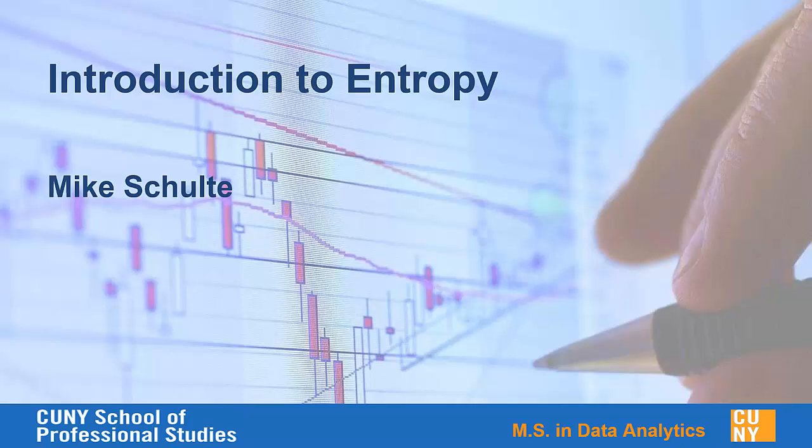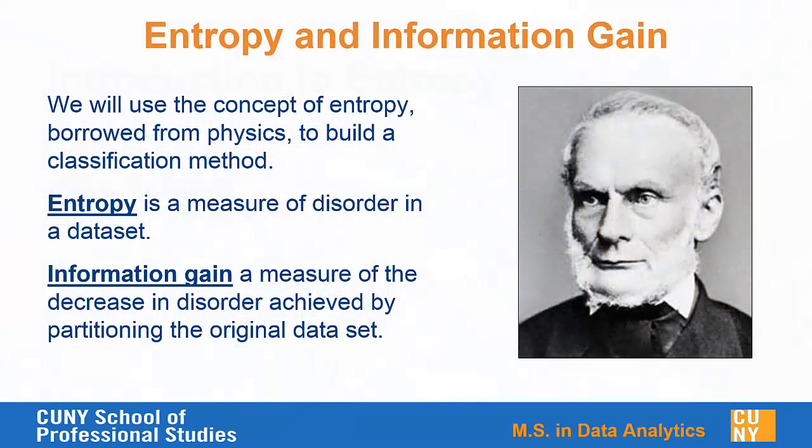This video lecture will serve as a brief introduction to entropy as we use it in data science. We're borrowing the concept of entropy from physics, which originated back in the 1860s. You can see here a picture of Rudolf Clausius, who came up with the second law of thermodynamics. What we're going to use it for in data science is a measure of disorder in a data set, and then we'll use a related concept of information gain to measure the decrease in disorder that we achieve when we partition our data set based on some additional attribute.